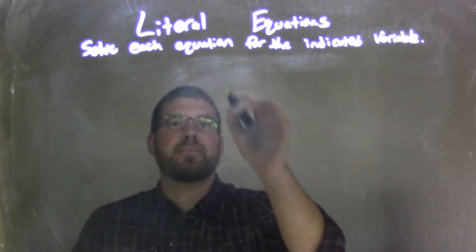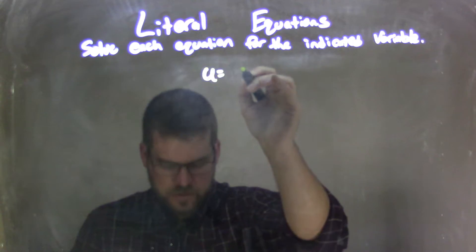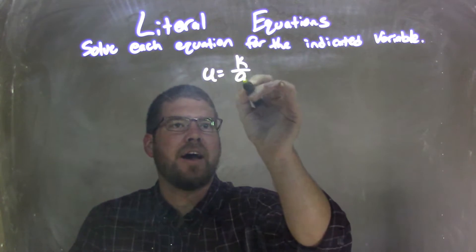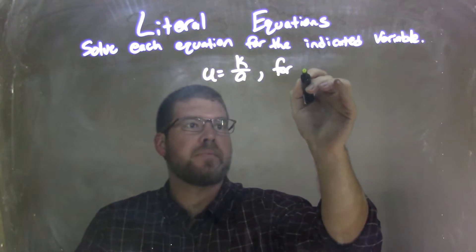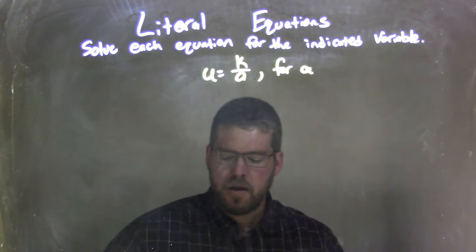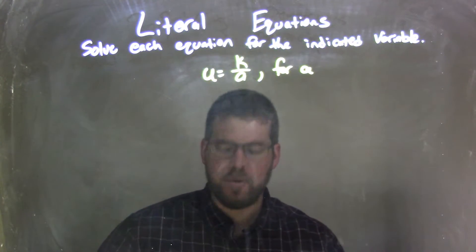So if I was given this equation, u equals k over a, and we need to solve that for a. So if u equals k over a, we need to solve that for a.